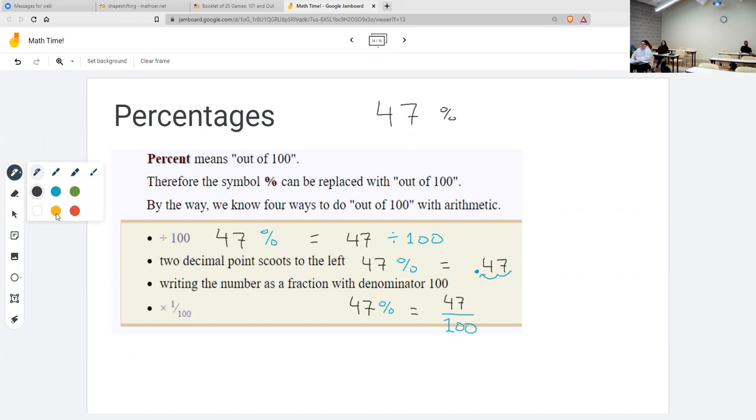And then the last thing I can do is I could take 47 percent and replace the percent symbol with a times 1 over 100. So we have four different things that are math things that mean out of 100: divided by 100, two decimal point scoots to the left, write it as a fraction with 100 as the denominator, or times 1 over 100.